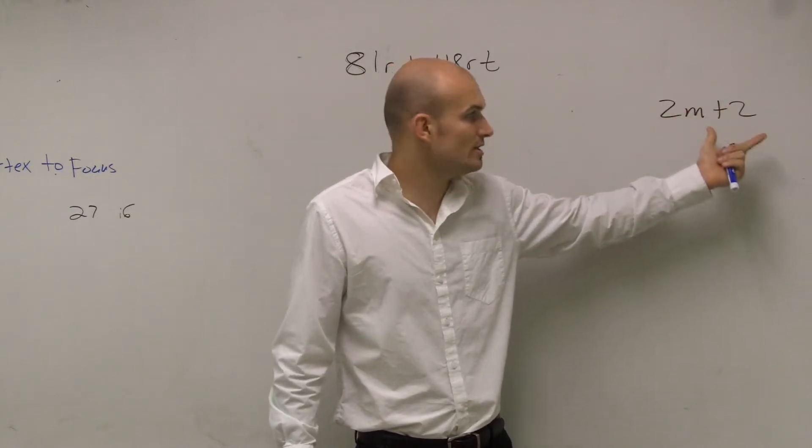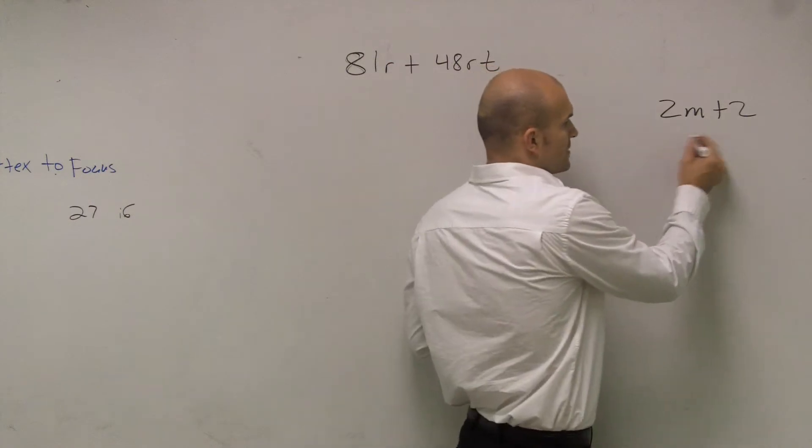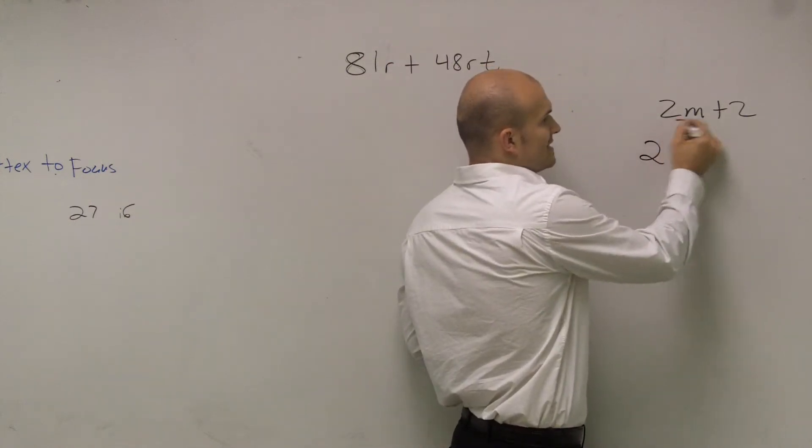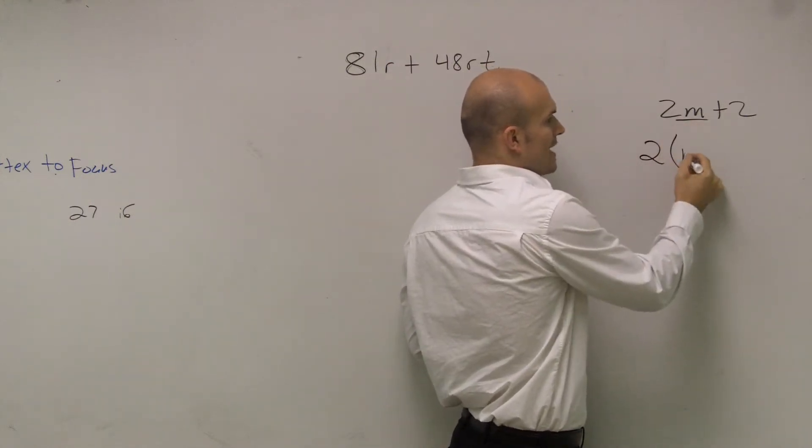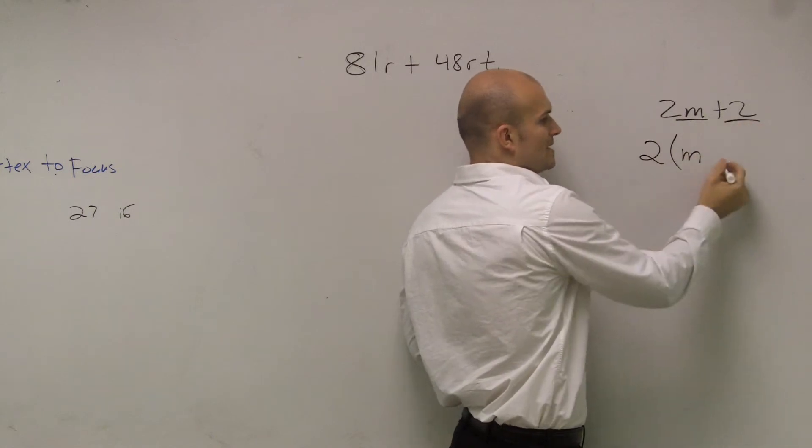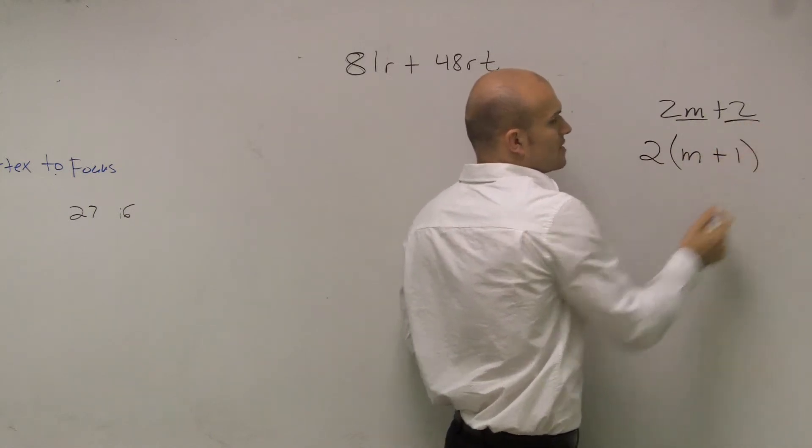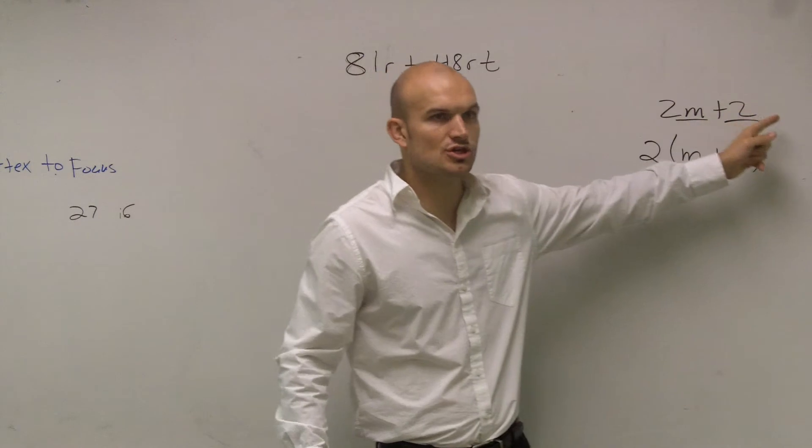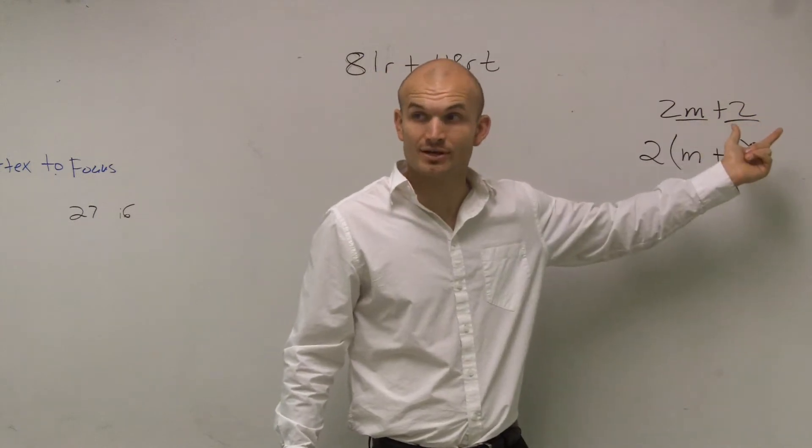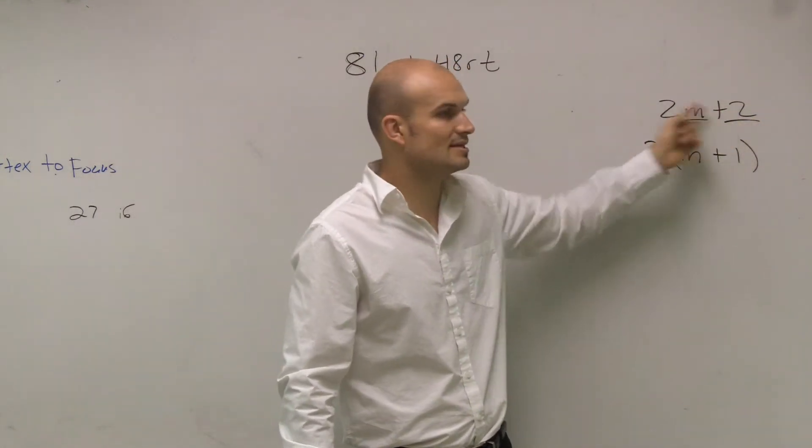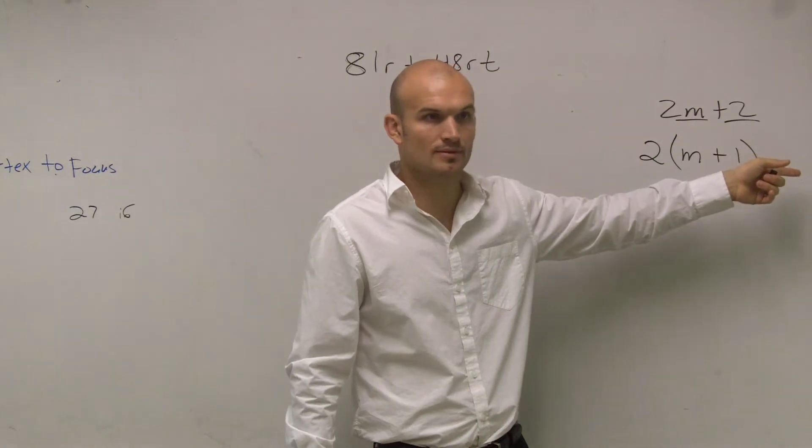Well, the only thing that evenly divides into both of them is a 2. So if I divide this term by 2, I'm left with m. And divide 2 by 2, I'm left with 1. So now, by dividing both of those terms by the common factor, I'm able to rewrite it as a multiplication problem.